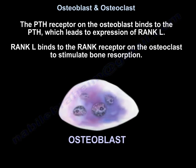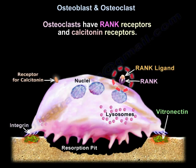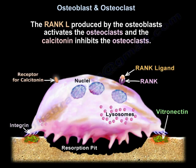The PTH receptor on the Osteoplast binds to PTH, which leads to expression of Rank-L. Rank-L then binds to the Rank-Receptor on the Osteoclast to stimulate bone resorption. The Osteoclast has Rank-Receptor and Calcitonin receptors. Rank-L produced by the Osteoplast activates the Osteoclast, while Calcitonin inhibits it.